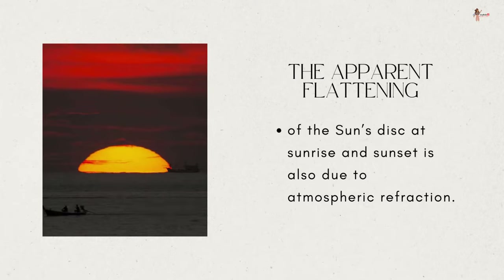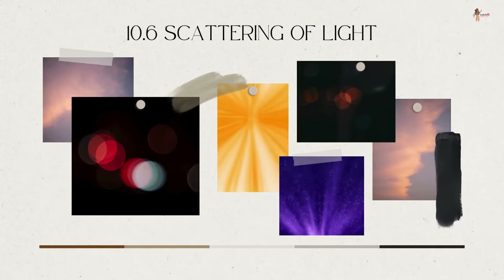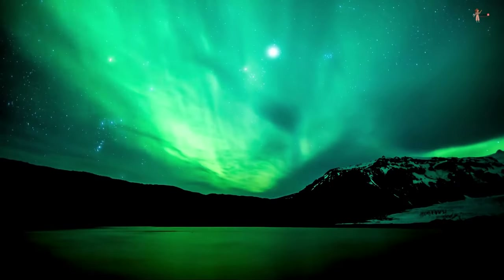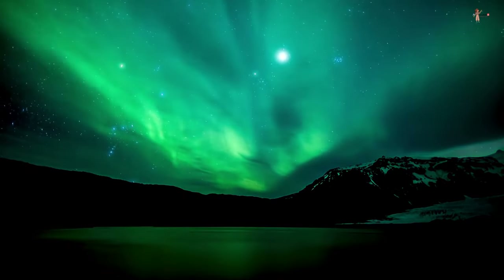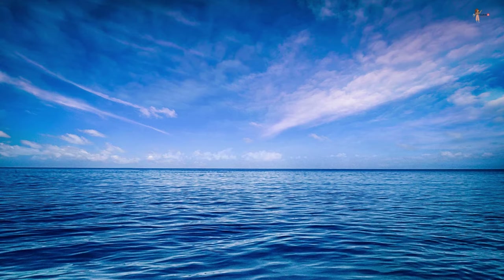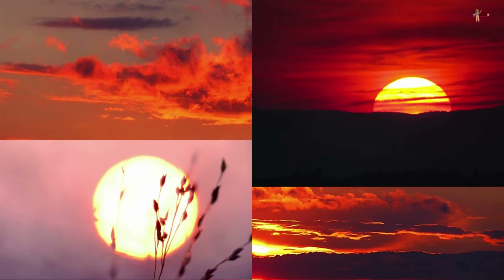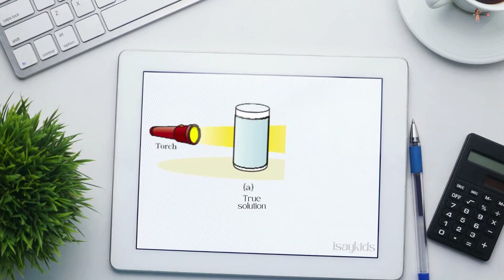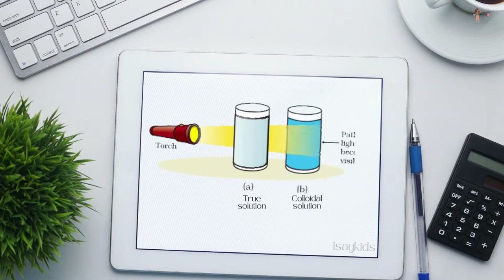Scattering of light: the interplay of light with objects around us gives rise to spectacular phenomena — the blue color of the sky, color of water in deep sea, and the reddening of the sun at sunrise and sunset. The path of a beam of light passing through a true solution is not visible; however, its path becomes visible through a colloidal solution where the size of the particles is relatively larger.